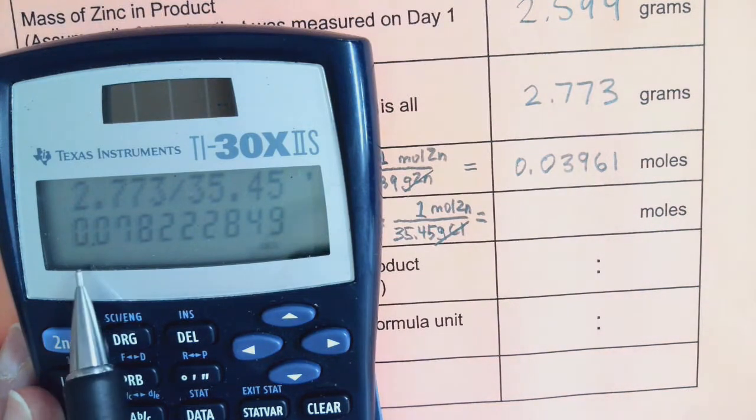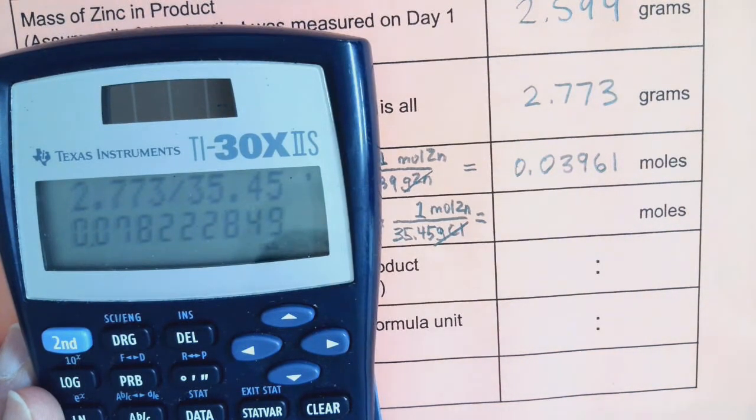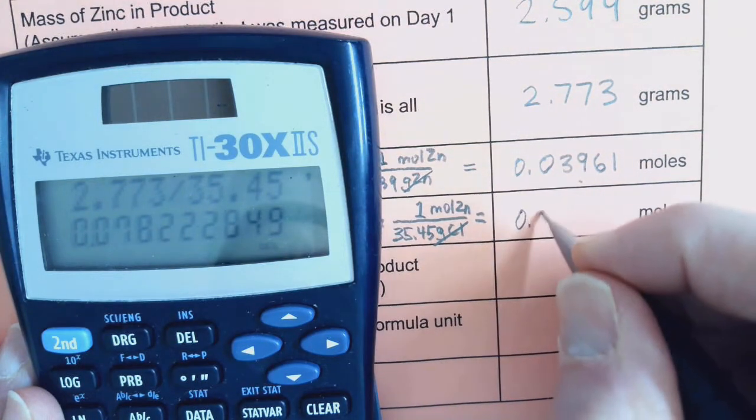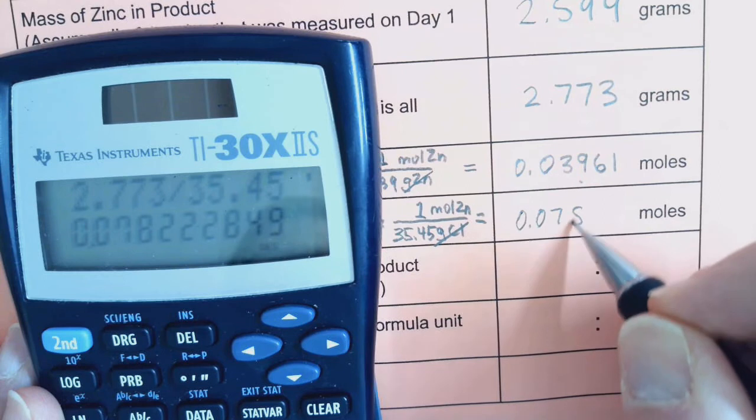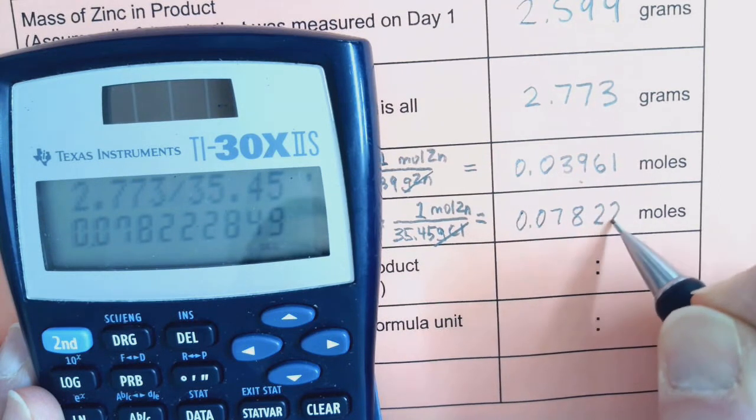2.773 divided by 35.45 is a value. I'm going to keep four digits. Again, leading zeros are not significant. So I get 0.07822.